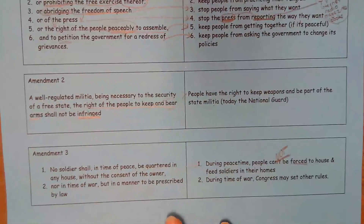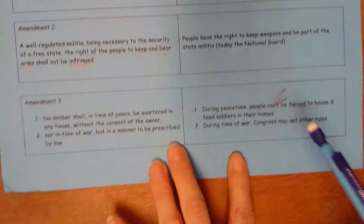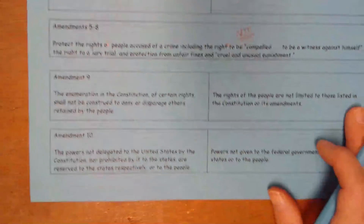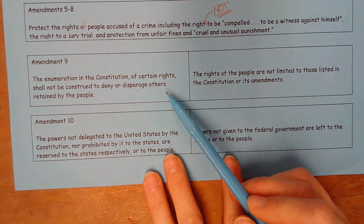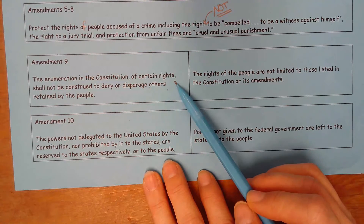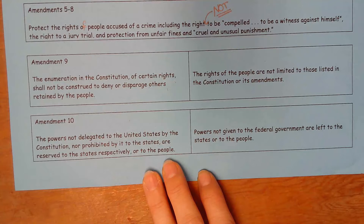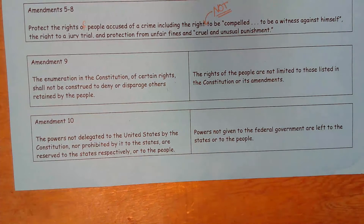Having made it all the way through nearly all of the Bill of Rights, the first 10 amendments to the United States Constitution, we come to Amendments 9 and 10. What do they have to say? Amendment 9 says: the enumeration in the Constitution of certain rights shall not be construed to deny or disparage others retained by the people.